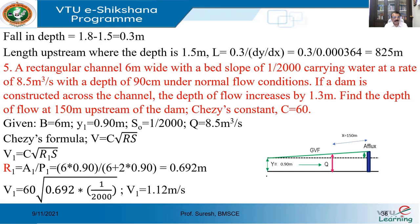We will continue with some more problems. In the last class, we started with finding the length of this GVF - gradually varied flow surface profile. In the next problem, we were asked to find the length of this surface profile from the obstruction to a given depth between the normal depth and the afflux. Now in this problem, it is the reverse: our aim is to find the depth of flow at a distance of 150 meters from the afflux.